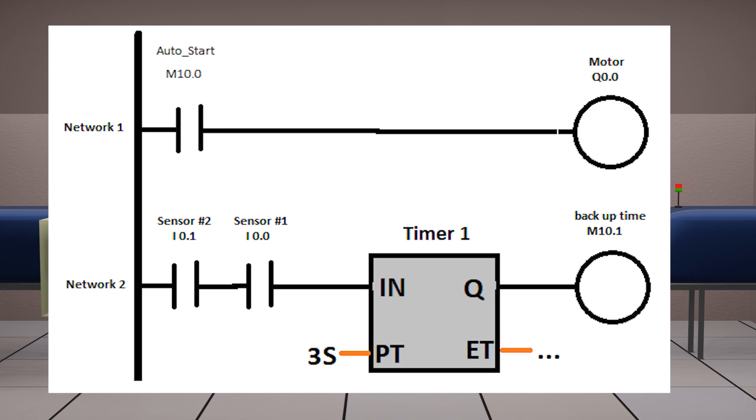Next, in network 2, we insert two backup sensors in series with each other. When both sensors are sensing buckets, this means that the conveyor belt is full. This starts the delay timer 1.